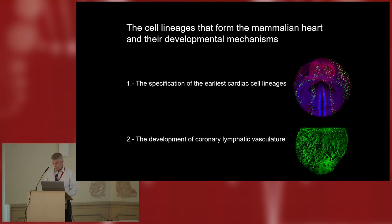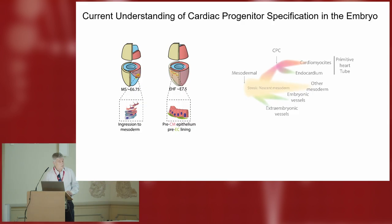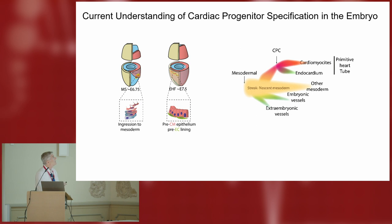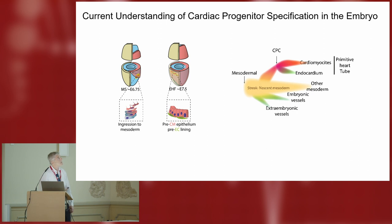On the first topic, as you probably know, mesodermal cells are produced at the primitive streak at the posterior end of the embryo and then migrate to the anterior part, where they very early form the cardiac crescent. This crescent already contains the main cell types: cardiomyocytes and endothelial cells that will become the endocardium. The established view in the field is that there is a cell called the cardiac progenitor cell that is specified and then subsequently diversifies.